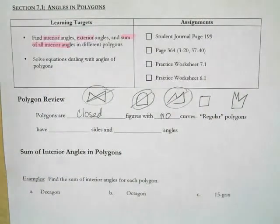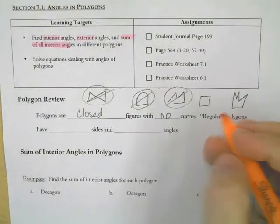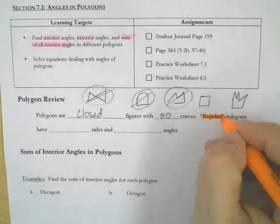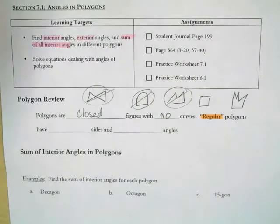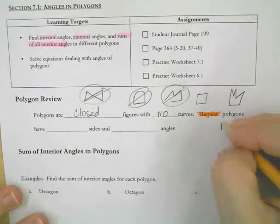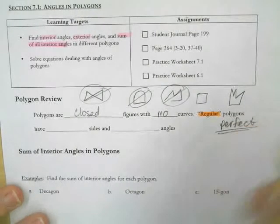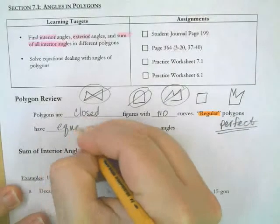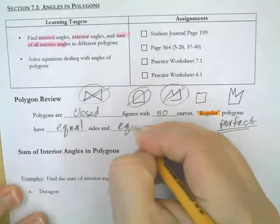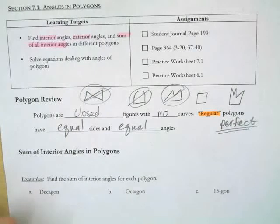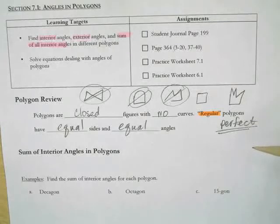If you remember the word "regular," regular polygons mean that they're perfect. And when they're perfect, they have equal sides and equal angles. We have dealt with triangles a lot, and a perfect triangle — a regular triangle — is an equilateral triangle, because it has three equal sides and three equal angles.